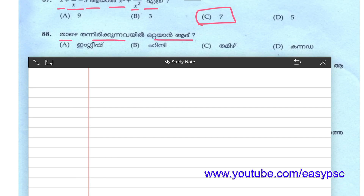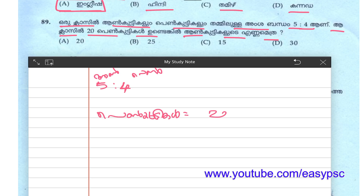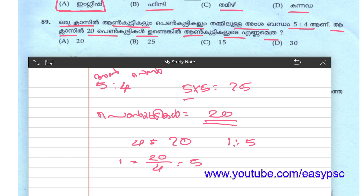English, Hindi, Tamil, Kannada. English is the same as Hindi. Hindi, Tamil, Kannada Hindi, Tamil — Kannada is the same as Hindi, Tamil, Kannada. The English class is the same as Hindi, Tamil, Kannada. To choose 5 from here, the level gets left to 25. 4 ratio is 20. Here is 1 ratio is 20 by 4. 1 ratio is 5. 5 ratio is 5. Option B is 25.